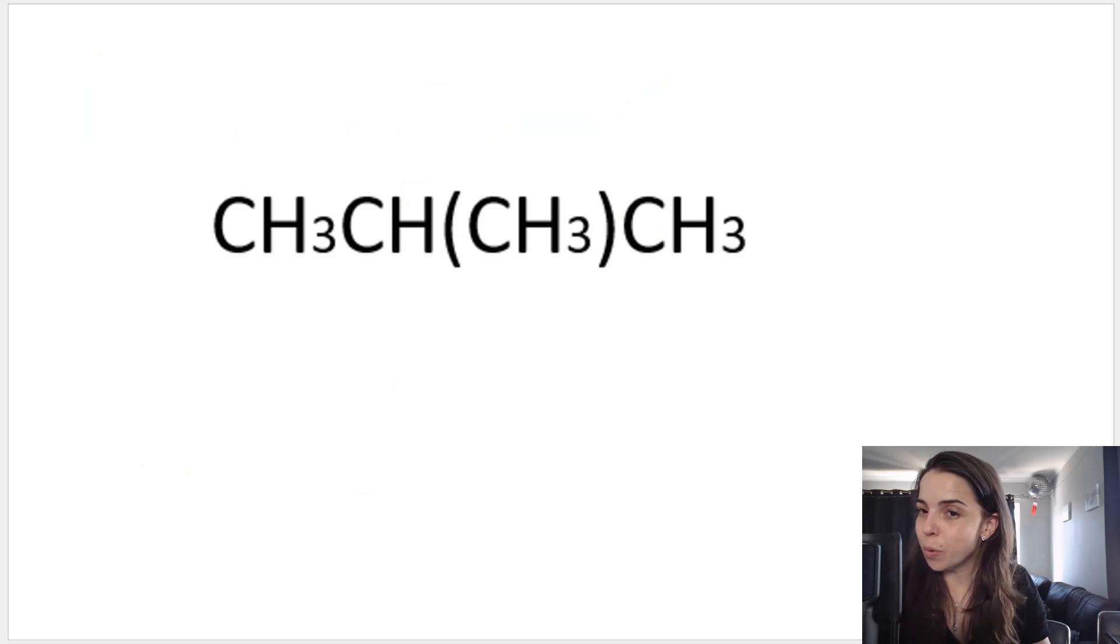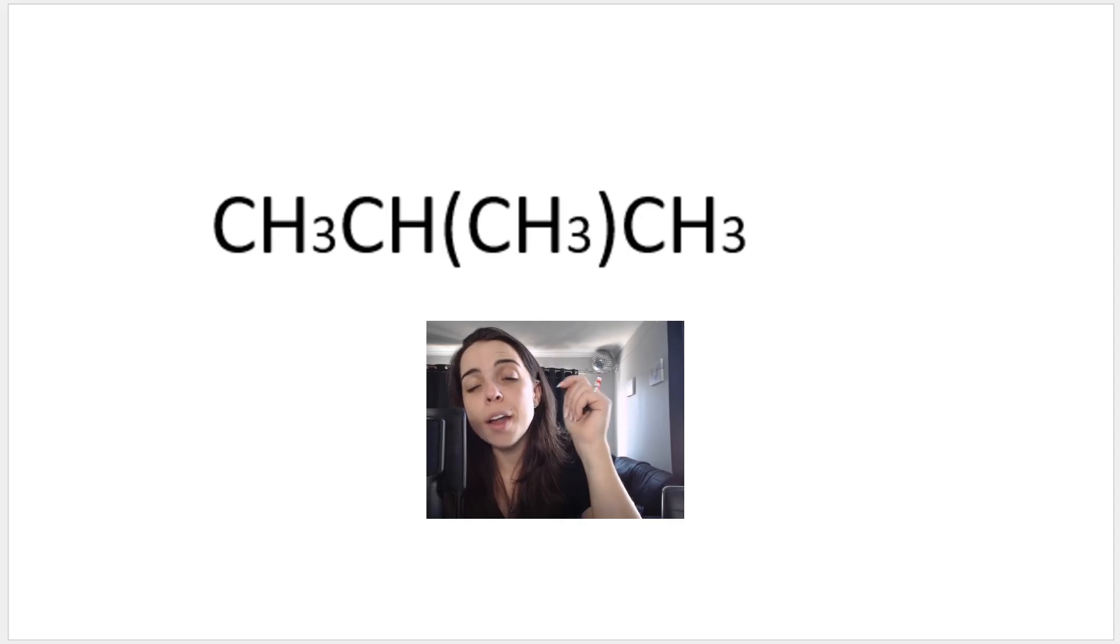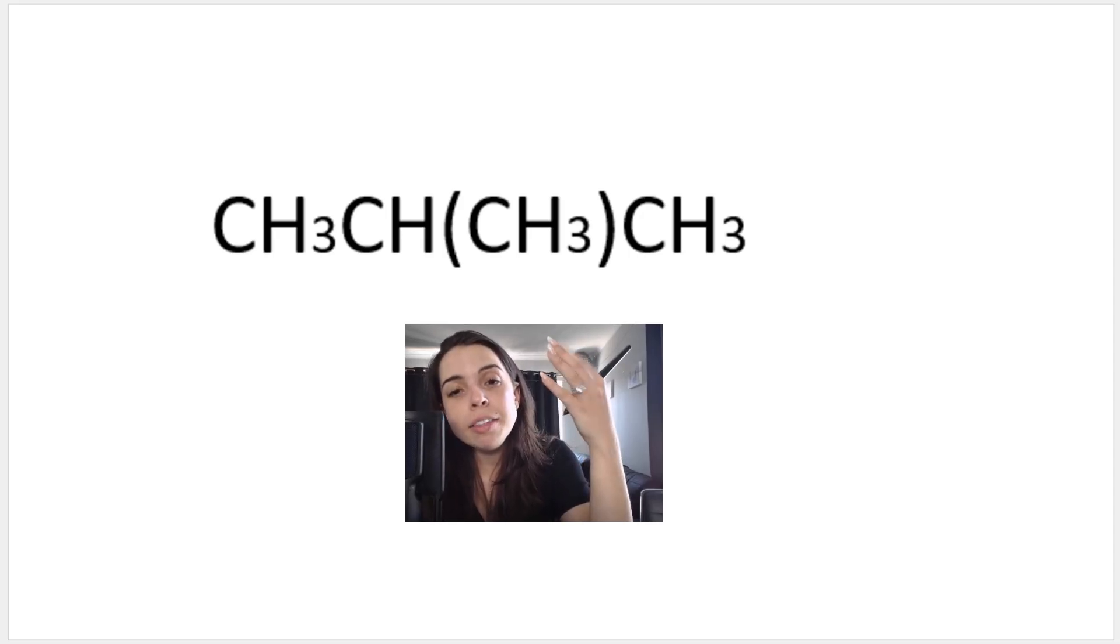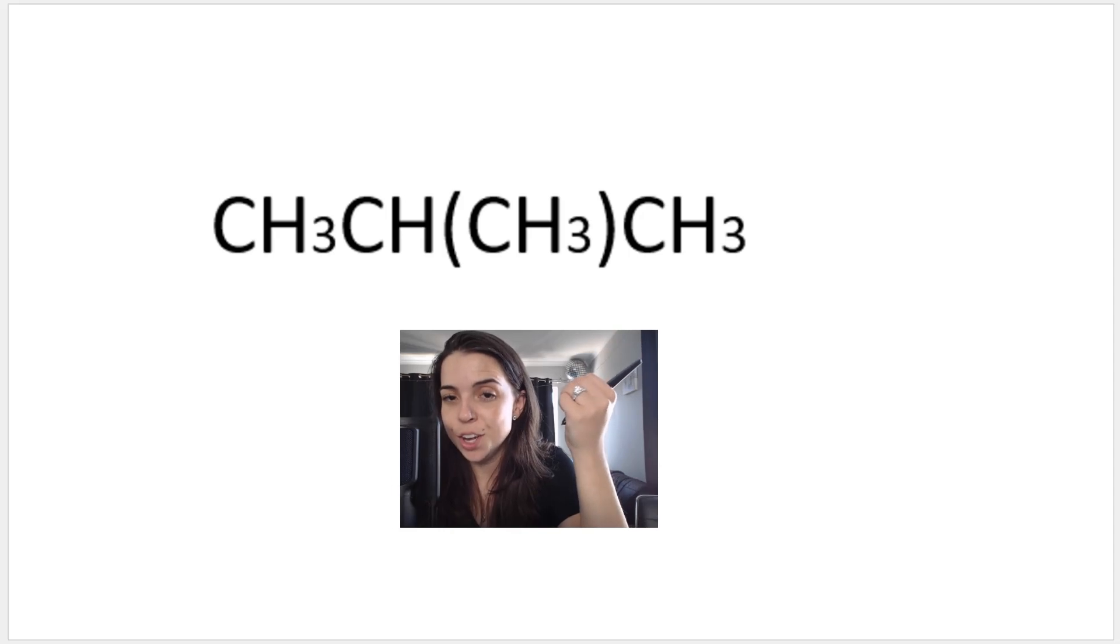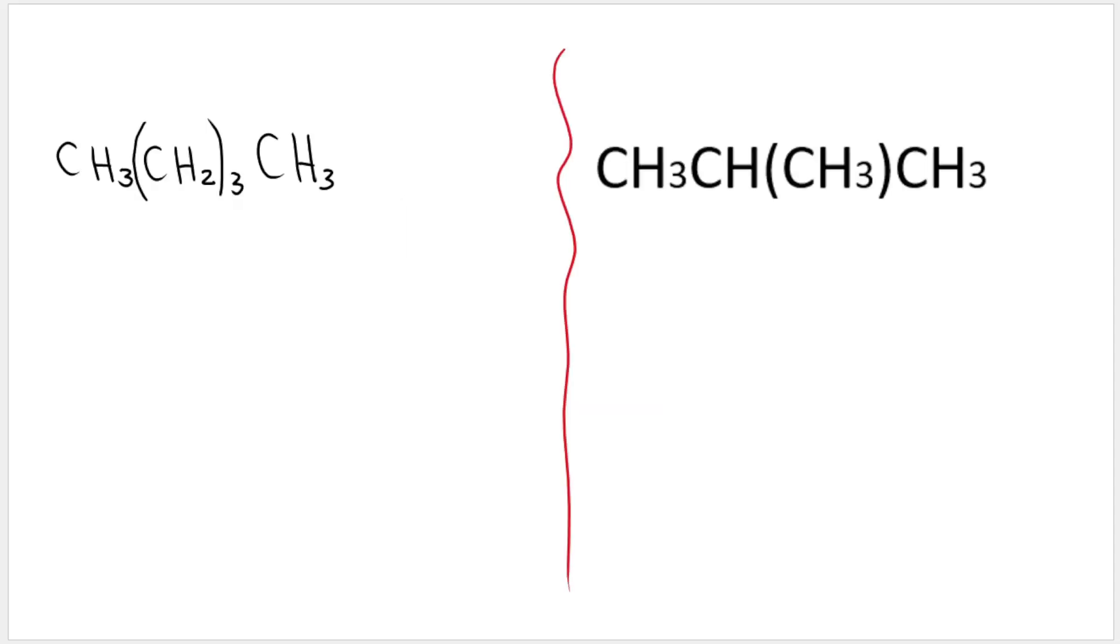Example number three is an interesting one. And if you ever see something like this, brackets, it can mean one of two things. Either it is indicating a branch, or they are using it to help condense a long alkane. And I actually need you to understand the difference between these two. In this case, they are condensing a long chain. In this case, it actually represents a branch.